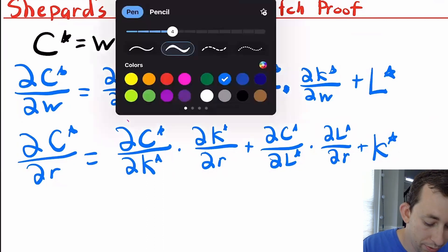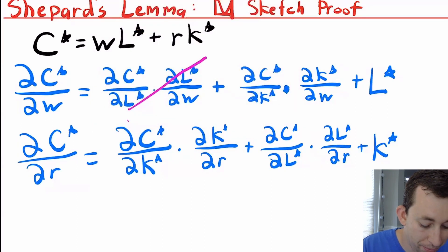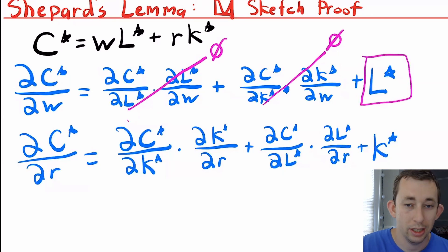And again, all of these first things, this is an indirect effect and envelope theorem says that these are zero. This is also an indirect effect, which the envelope theorem tells us is zero. Therefore, DC star DW is equal to L star.